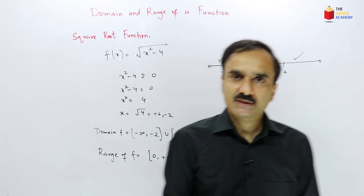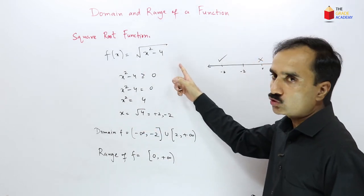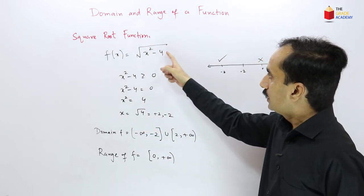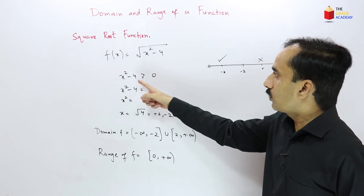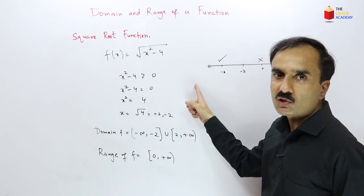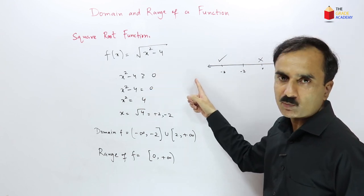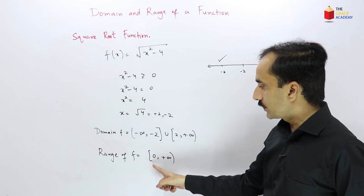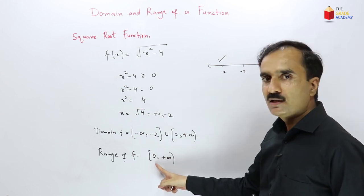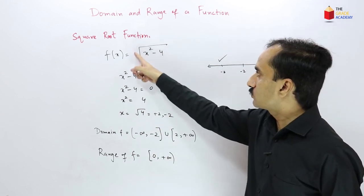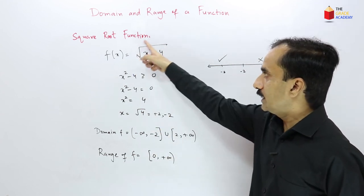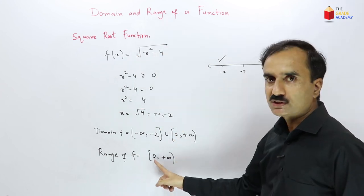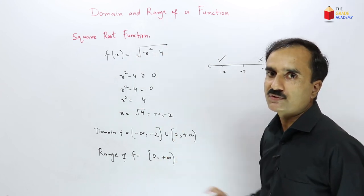The range of f(x) = √(x²−4) is [0, +∞) since a square root function always gives non-negative outputs. In general, whenever we have a square root function, we solve the expression inside ≥ 0 for the domain, and the range is always [0, +∞).